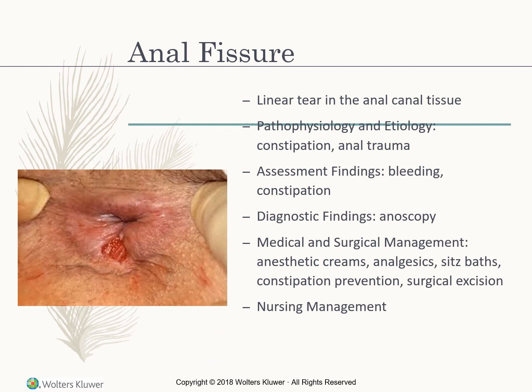Anal fissures are tears in the anal canal caused by constipation or anal trauma. Assessment findings include bleeding and constipation. Anoscopy is used for diagnosis. Medical and surgical treatment includes anesthetic creams, analgesic sitz baths, constipation prevention, and surgical excision.